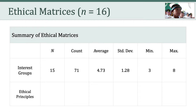The minimum number of interest groups specified was 3, and the maximum was 8. The sample size here is 15 instead of 16 because I had to exclude one matrix that didn't use interest groups as rows. Next, I did the same thing for the columns, or the ethical principles.